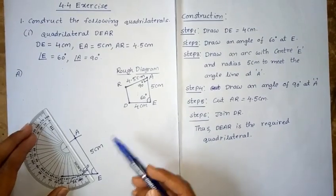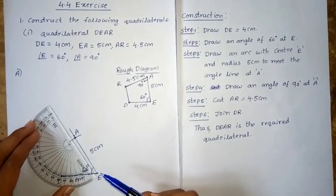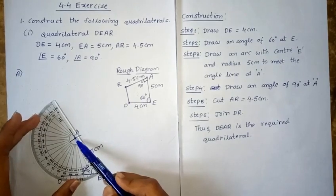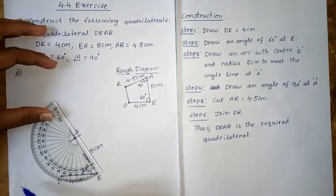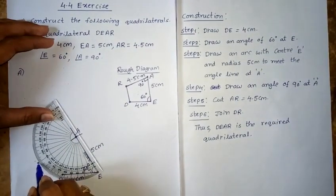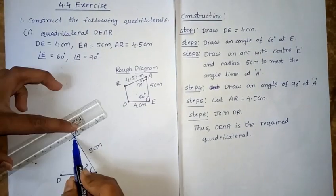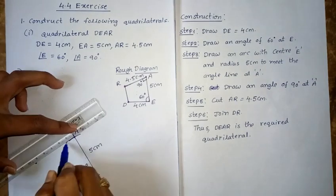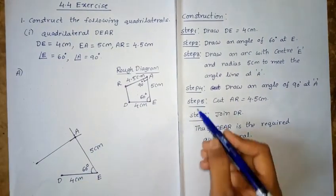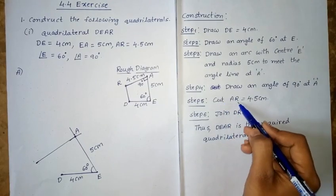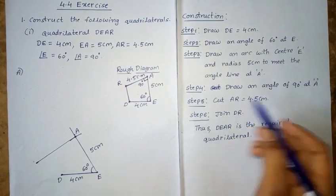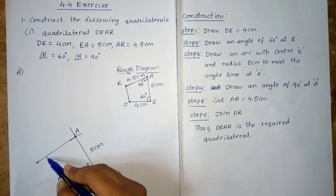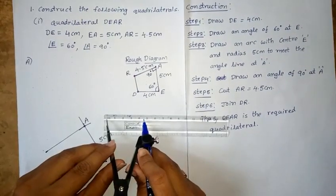Now, using the protractor placed at point A, locate the 90 degrees angle and draw the angle line at A. This is angle 90 degrees. Next, 5th step: cut AR equal to 4.5cm from point A along the angle line. This is length 4.5cm.